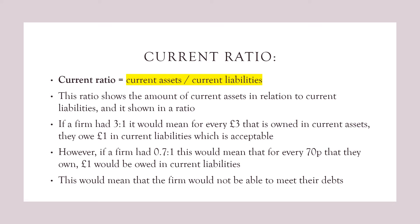So if a firm had 3 to 1, it would mean that for every £3 owned in current assets, they owe £1 in current liabilities, which is acceptable. However, if a firm had 0.7 to 1, this would mean that for every 70p that they own, £1 would be owed in current liabilities. So this would mean that the firm would not be able to meet their debts.